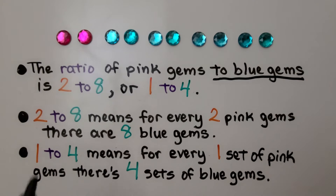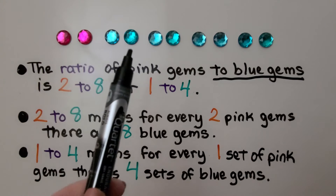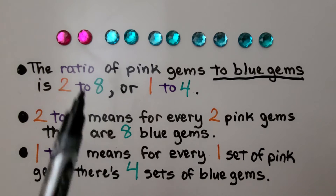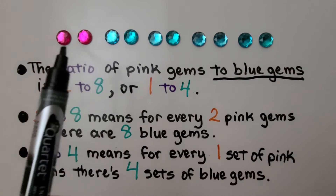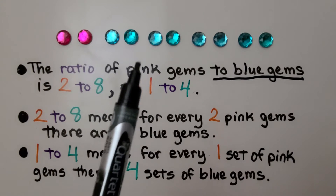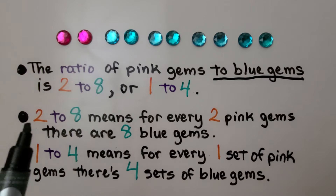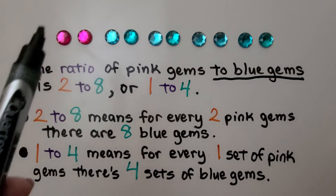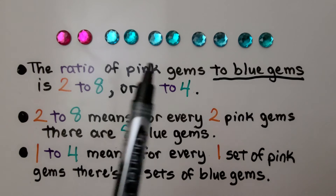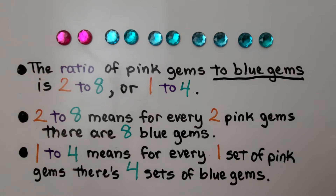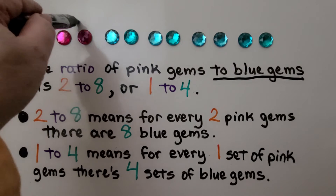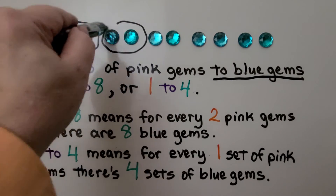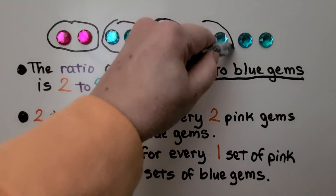Here we have two pink gems and eight blue gems. The ratio of pink gems to blue gems is two to eight, or one to four. Two to eight means for every two pink gems, there are eight blue gems. One to four means for every one set of pink gems, there are four sets of blue gems.